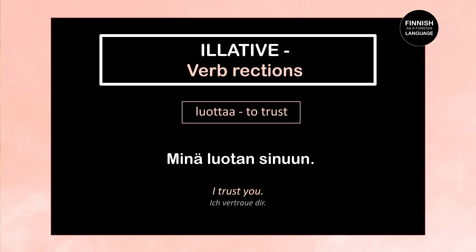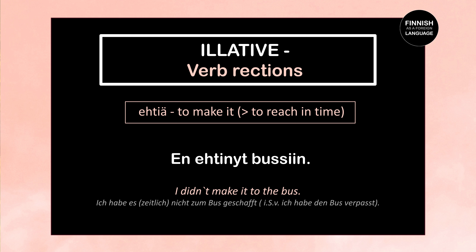Three more examples: Minä luotan sinuun — I trust you. Luotan is the first person singular present tense of luottaa, meaning to trust. Sinuun is the illative of sinä. When saying I trust somebody, the person we trust stands in the illative. Next: En ehtinyt bussiin — I didn't make it to the bus. En ehtinyt is the first person past tense negative of ehtiä, meaning to reach something in time. Because of this verb, bussi takes the illative: bussiin.